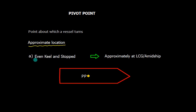In this case, when the vessel is at even keel and stopped, the approximate location of pivot point is very close to longitudinal center of gravity or very close to amidship, say here.